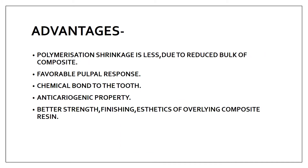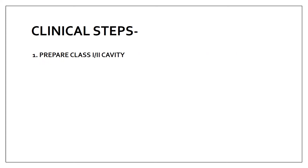The advantages of the sandwich technique include: polymerization shrinkage is less due to reduced bulk of composite - since you use GIC or flowable composite under the composite, the bulk of composite is reduced, thereby reducing shrinkage. Other advantages are favorable pulpal response, chemical bonding to the tooth, anti-cariogenic properties due to fluoride in GIC, and better strength, finishing, and aesthetics of the overlying composite resin.